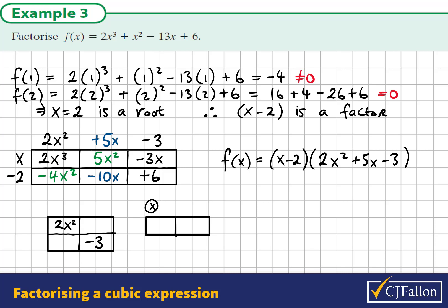I know if I multiply these two terms, I get negative 6x squared. I want the x's to add up to 5x. The factors of negative 6x squared that add to 5x will be 6x and negative 1x. I place these back into the array.